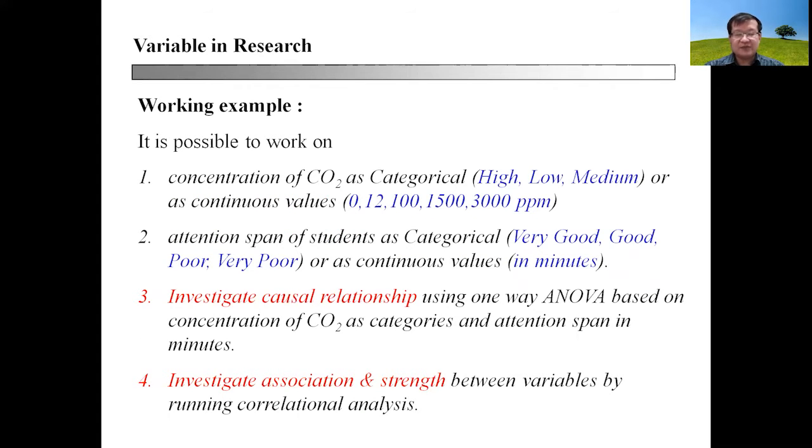This will be an example of independent and dependent variables. In this case, you can have concentration of CO2 as categorical or continuous values. Attention span can be categorical or continuous values as indicated either as very good, good, poor, or very poor attention span.